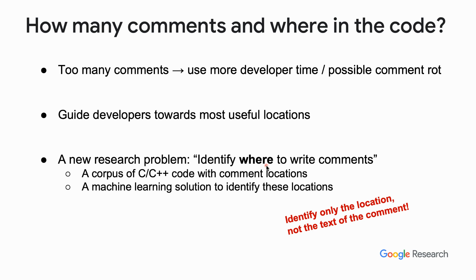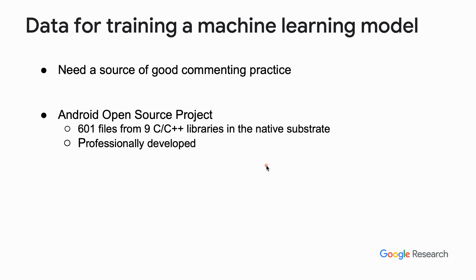I'll present a corpus of C code where the comment locations are marked and a machine learning solution that can automatically identify them. To train a machine learning model, we need a source of good commenting practice that the model can emulate. For this, we use files from the Android open source project. Since the project is professionally developed, we consider it as containing good comment locations.